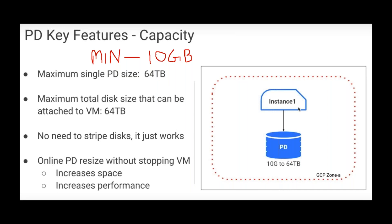Whenever you create a virtual machine, the image that you select while creating the virtual machine — you will have that disk also created. The lifetime of the disk is the lifetime of the instance. With a persistent disk, you can create it by snapshot, or create a boot disk like in the previous video, but we will be creating a blank persistent disk. Once you create a persistent disk and attach it to an instance, even if you terminate the instance you don't lose the persistent disk.